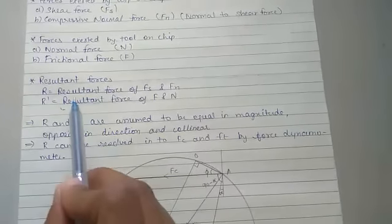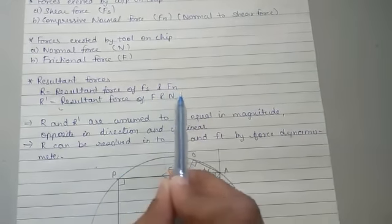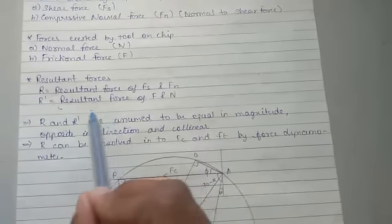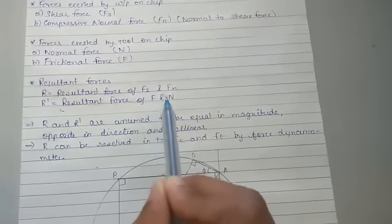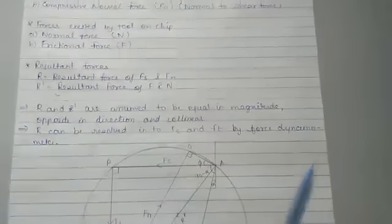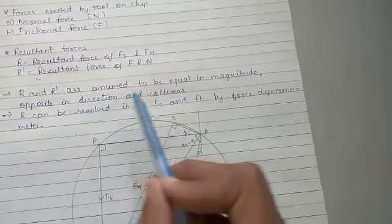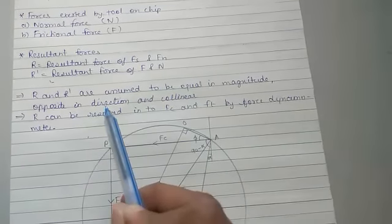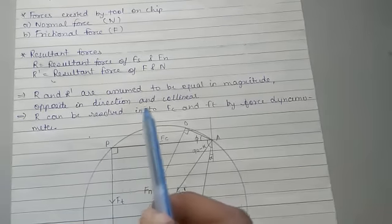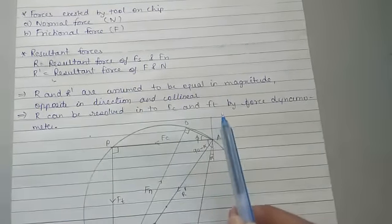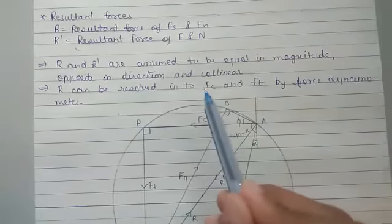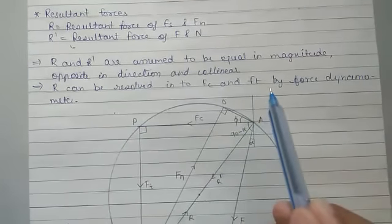The resultant of Fs and Fn — shear force and normal force — is R. The resultant of frictional force F and normal force is R dash. R and R dash are assumed to be equal in magnitude, opposite in direction, and collinear. R can be resolved into Fc and Ft by force dynamometer, where Fc means cutting force and Ft means tangential force.